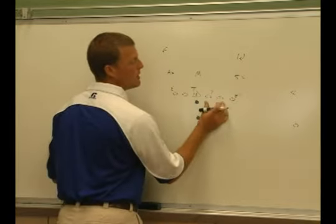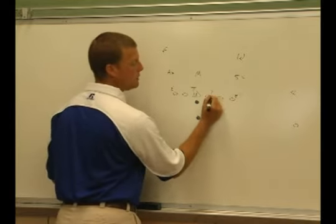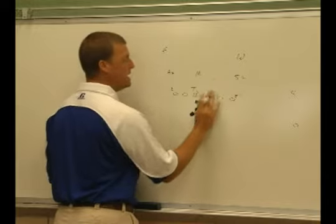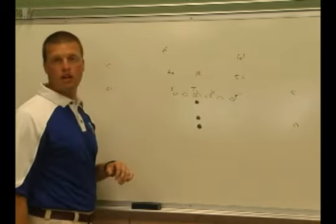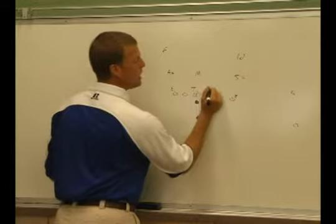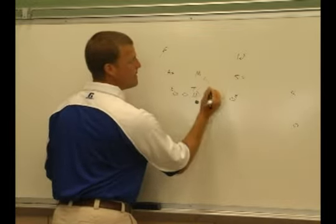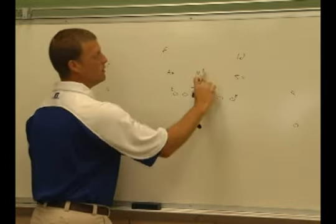What we'll do out of our play side guard and play side tackle is we want to get a good double team block. We need to move this guy off the line of scrimmage. We are going to double team to the Mike linebacker. So these two are going to have these two.